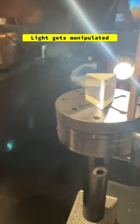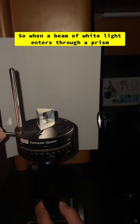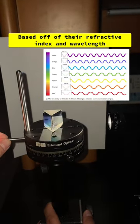Light gets manipulated by the material it's going through. So when a beam of white light enters through a prism, each color will bend inside of it differently based off of their refractive index and their wavelength.